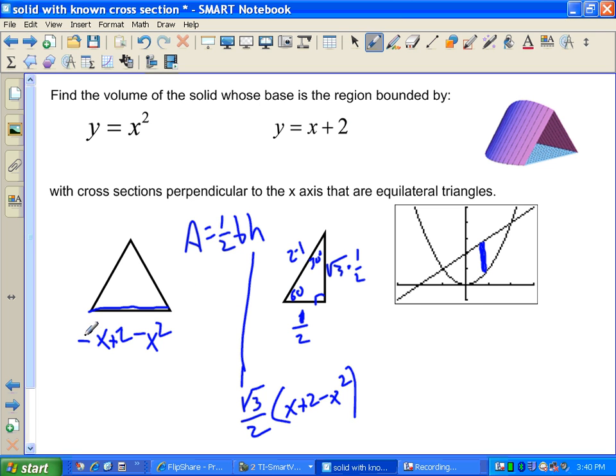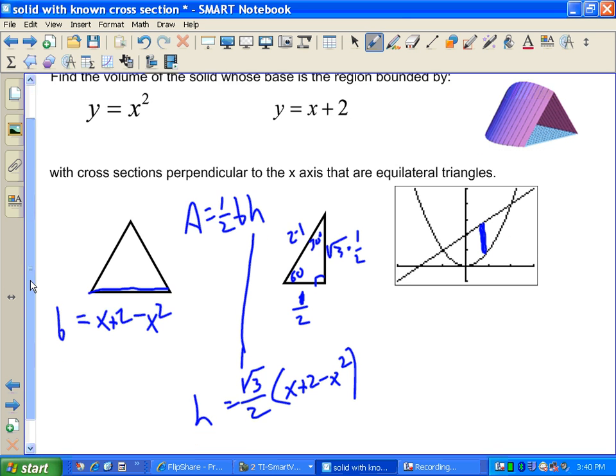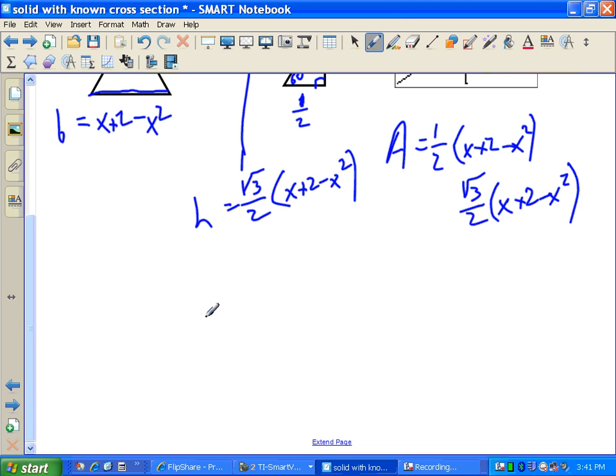So, to figure out the area, I'm going to do 1 half, the base, which is this thing here, times the height, which is this thing here. The area is 1 half, the base, x plus 2 minus x squared times the height, which is root 3 over 2 times x plus 2 squared. I'm trying to simplify this a little bit. This turns out to be root 3 over 4 times x plus 2 minus x squared squared. See where all of this stuff turns into that stuff. That's the area.